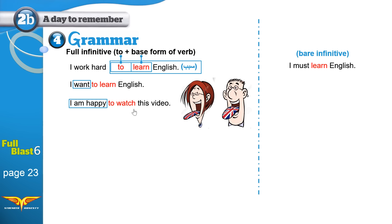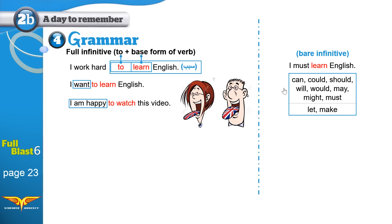Now we will talk about not adding 'to' to the base form — the bare infinitive. We don't add 'to' when we have a modal verb. The modal verbs are: can, could, shall, should, will, would, may, might, and must. Although 'shall' may not be in your textbook, it follows the same rule.